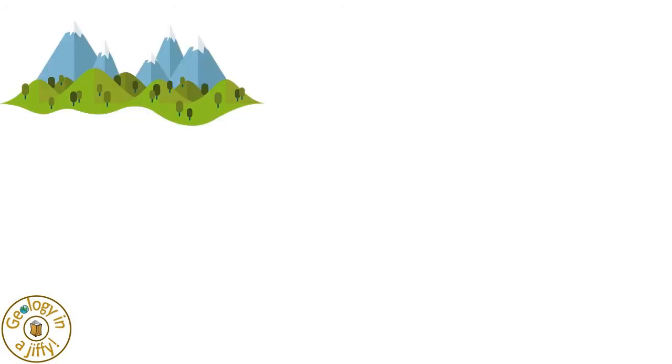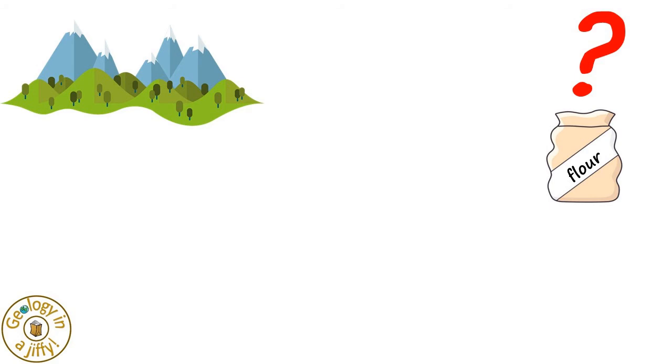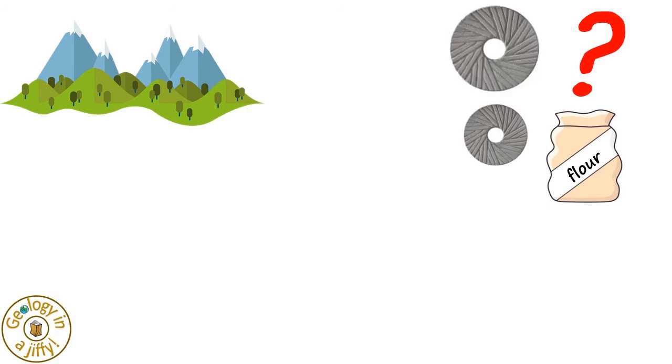Field geologists use Mohs Scale to help identify minerals using scratch kits, as these items used to scratch the minerals are easy to obtain and carry. A miller making flour will need to know the hardness of the minerals in their millstones, so they know which millstone to use with different types of grain.